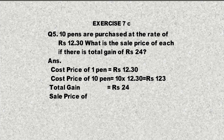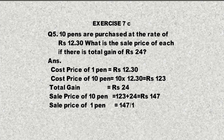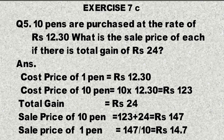Sale price of 10 pens equals total cost plus total gain, which is 123 plus 24, equal to 147 rupees. Sale price of one pen: using unitary method, 10 pens cost 147, so one pen costs 147 divided by 10, which equals Rs. 14.70. These were the 5 questions. Remaining questions will be in the next video. Please subscribe to the channel and share the video.